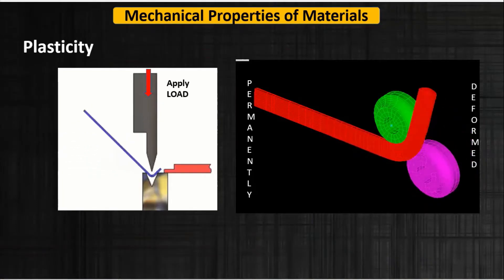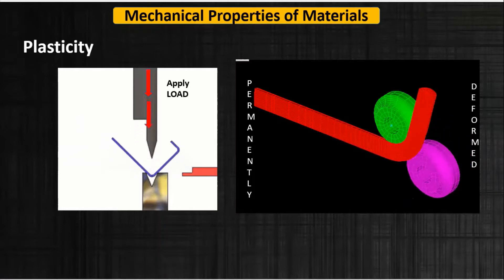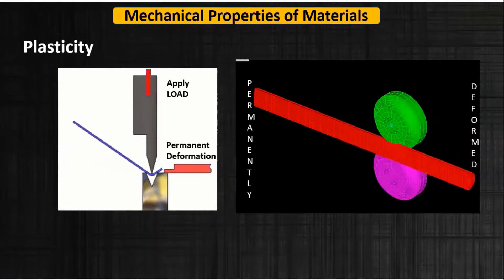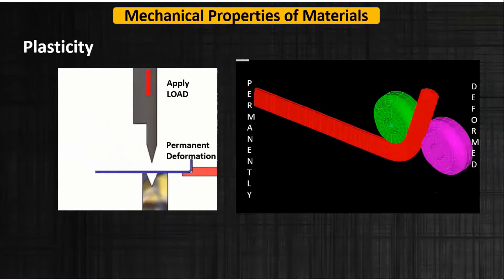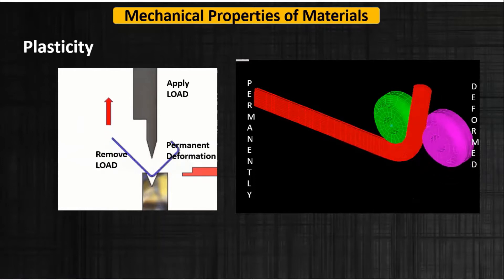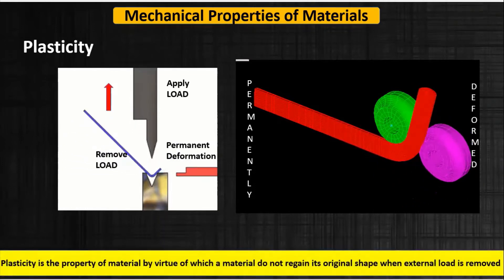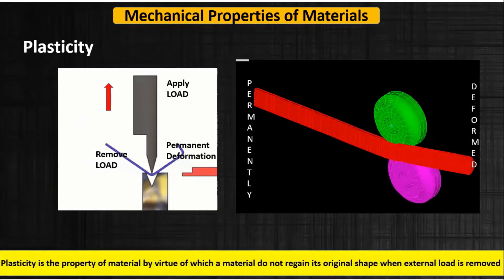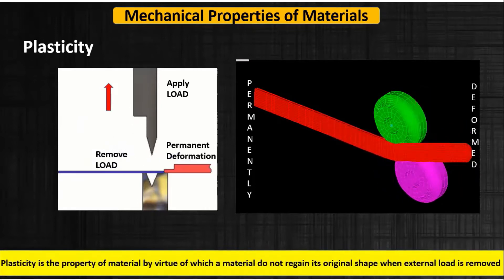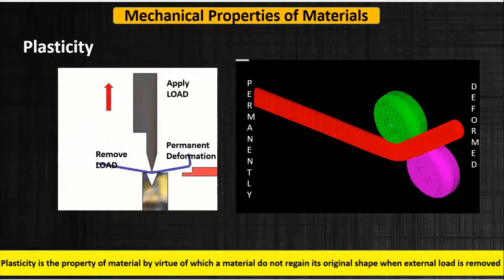Now let's understand plasticity. When we apply a load on a bar, the shape of the bar goes under permanent deformation even when the external load is removed. So plasticity is a property of material by virtue of which a material does not regain its original shape when the external load is removed.